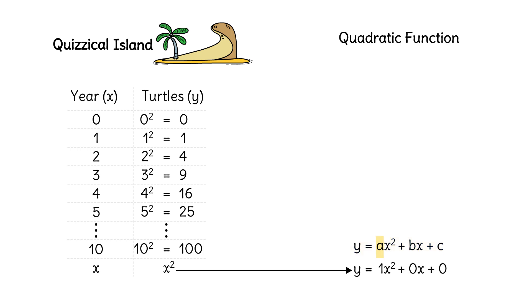But in general, a, b, and c can be any real number and we've still got a quadratic. Here are two more examples of quadratics.